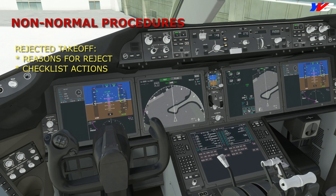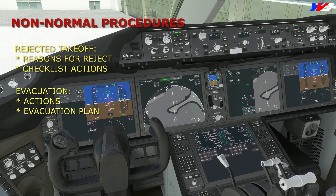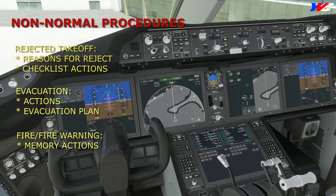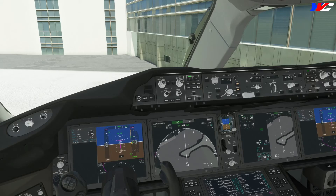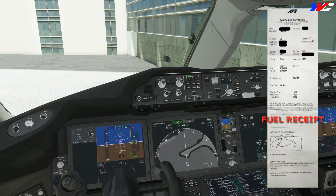Once that's done, we discuss non-normal procedures: in case of a rejected takeoff, what actions to take, whether evacuation is needed, where everyone goes, and the pilot in command always leaves the airplane last. We also cover fire memory actions before referring to the checklist. After the departure briefing, we wait for the required documents, starting with the fuel receipt.